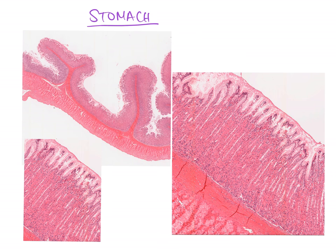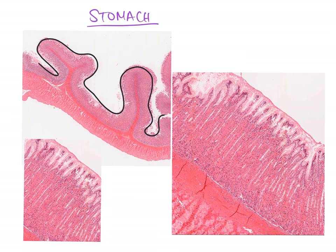Moving into the stomach: it's pretty obvious from the really nice folds — the rugae — sticking out on the surface, which you can see not just under a microscope but in real life. All four layers are visible: the mucosa layer, the submucosa as a darker pink layer, the muscularis layer, and the serosa layer at the very edge.